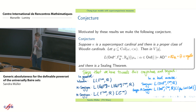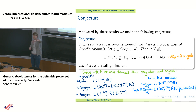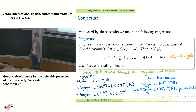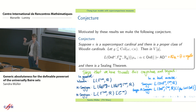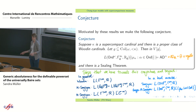The supercompactness of omega_1 seems to be deeply connected with models of determinacy. You can see this as another hierarchy: now you have determinacy, large cardinals, and forcing axioms, and you could add a hierarchy where you look at models of determinacy with supercompactness measures, and they seem to go up very high. The conjecture would be that this is consistent at exactly a Woodin limit of Woodin cardinals — to have a model of ADR plus theta is regular plus omega_1 is supercompact. There are some partial results suggesting that, but it's open.